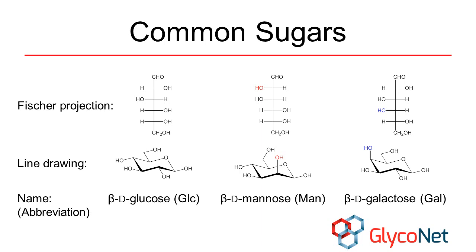Let's now look at a few of the most common sugars that you are likely to encounter. The most common sugar on Earth is glucose, which is the building block of starch, cellulose, and glycogen. In its ring form, beta-D-glucose has all of its hydroxyl groups in equatorial positions. Mannose is the C2 epimer of glucose and has an axial hydroxyl at carbon-2 in its pyranose form, while galactose is the C4 epimer of glucose with an axial hydroxyl group at carbon-4.